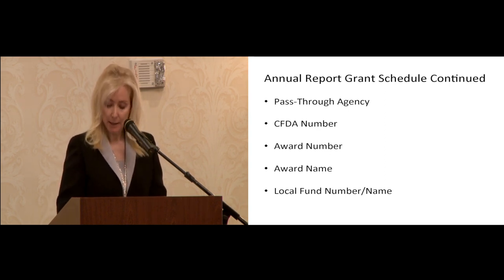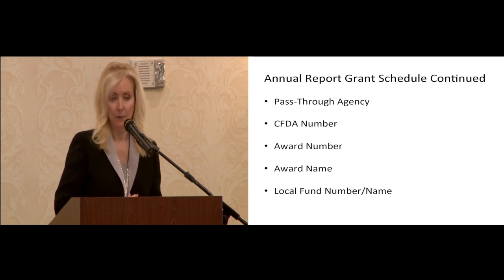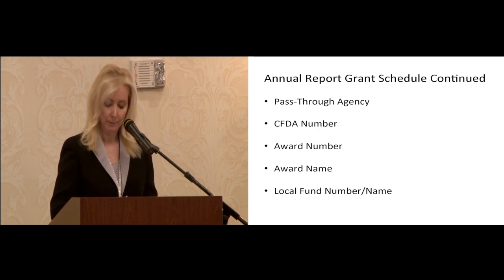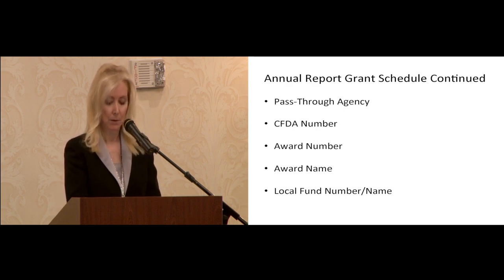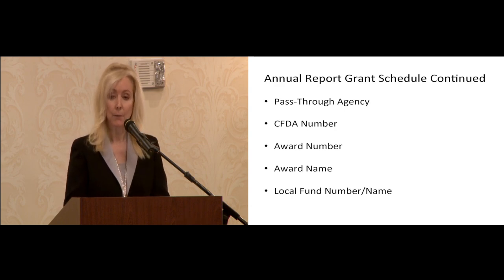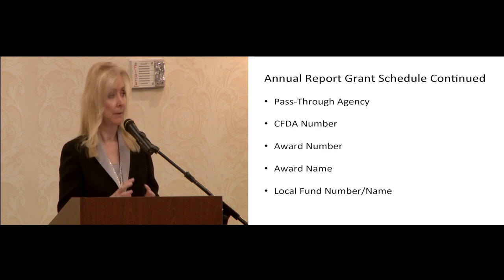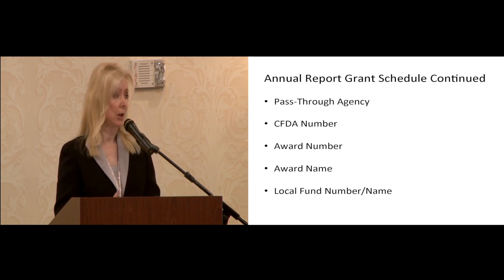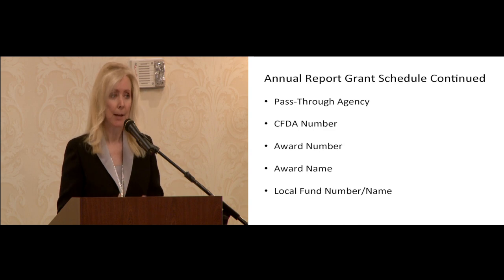The CFDA number is the number from the Catalog of Federal Domestic Assistance that identifies a federal grant program. If the grant involves federal funds, the CFDA number should be identified in your award letter. If the award letter does not identify the funding source, do not assume that it's from the state just because it doesn't say federal funding. More often than not, we're talking about federal funding of some way or another, so I would call that state agency and make sure.